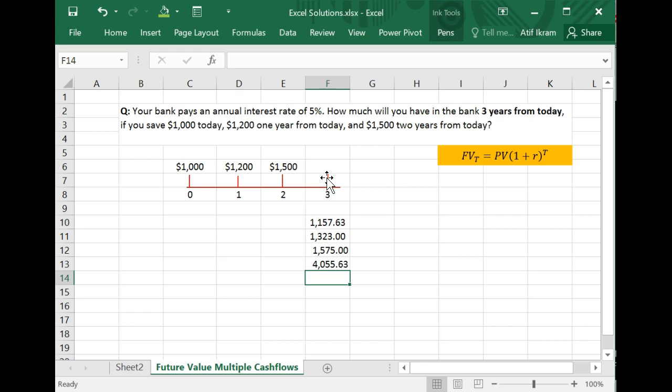That is the total amount of money that you will have at the end of three years if you make these deposits. And so this is how you can calculate the future value of multiple cash flows when you're interested in finding out what that future value will be at a certain time period.